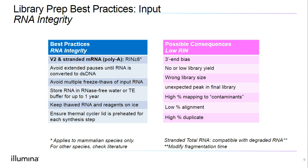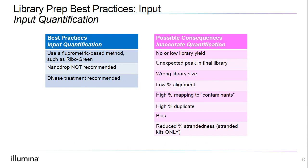Next, let's look at input quantification. For input quantification, we want to use the recommended total input required for the workflow selected. Some of our kits have the option to start with previously purified RNA, which is typically less than the amount of total RNA required. We recommend using a fluorometric-based method for quantifying RNA and not a spectrophotometry-based method such as the NanoDrop. UV spectrophotometry methods tend to be inconsistent for quantification and are not appropriate for our purposes. NanoDrop can be used to assess the purity of our RNA samples, not the quantity. We also recommend DNase treatment to get rid of DNA contamination.